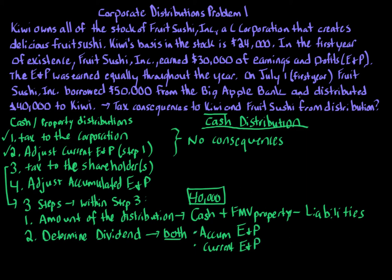We're told that in the first year of existence, Fruit Sushi earned $30,000 of E&P, and we're still in the first year when the distribution occurs. Accumulated E&P is zero because in the year a business starts, accumulated E&P is always zero — there have been no prior earnings, only formation. There is an exception for reorganizations or mergers, but that's not the case here. You would be told if there was accumulated E&P to start with. So almost always, accumulated E&P will be zero in the first year.